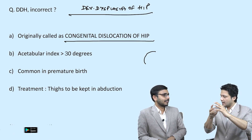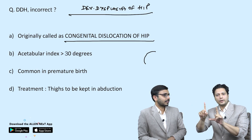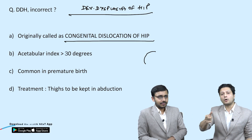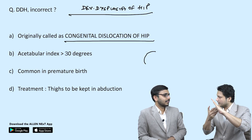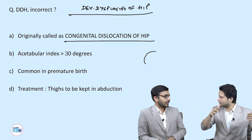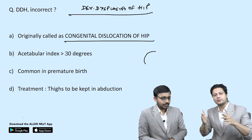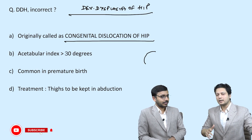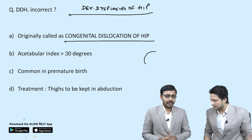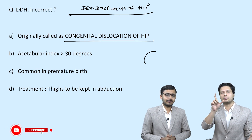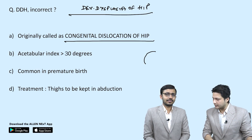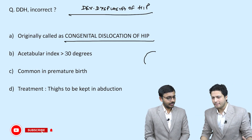The terminology changed from CDH to DDH to include children where acetabular dysplasia is present but dislocation has not yet occurred — broadening the screening criteria. Previously it was called congenital dislocation of the hip, but to include more children in the spectrum, the term was changed from CDH to DDH.